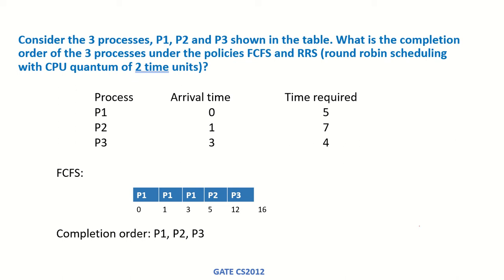In this video we are going to solve an example to compare two scheduling algorithms: first come first serve (FCFS) and round robin scheduling (RRS). Consider three processes P1, P2, and P3 with arrival times of 0, 1, and 3 respectively, and CPU burst times of 5, 7, and 4. We need to find the completion order under both algorithms. For round robin scheduling, the CPU quantum is 2 time units.